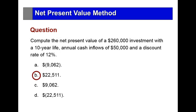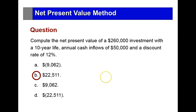To calculate this, we look at the present value of an annuity for 10 years at a 12% rate. We take that factor, multiply it by our $50,000 annual cash flow, and subtract it from our $260,000 investment. The present value of those cash flows is $282,511.